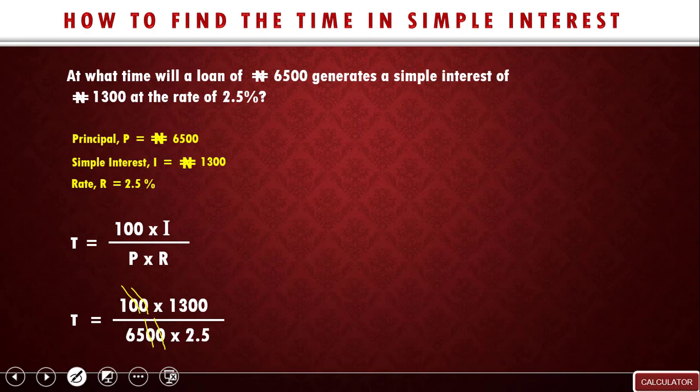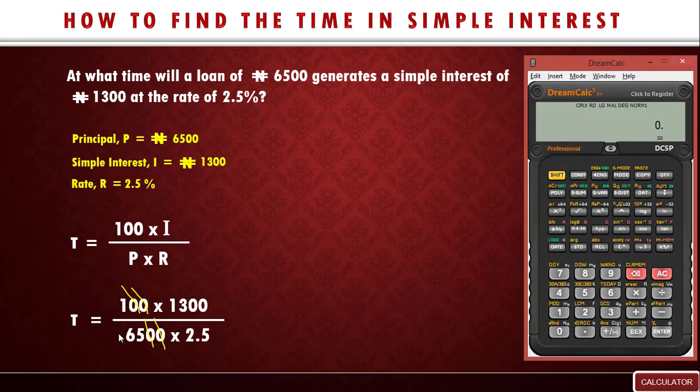Okay, so the next thing now, let's use our calculator now. So at the numerator side we have 1 times 1300, and that will give us 1300. So let's use our calculator now.